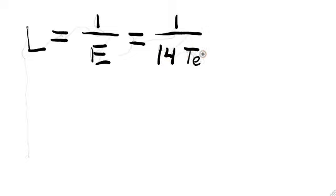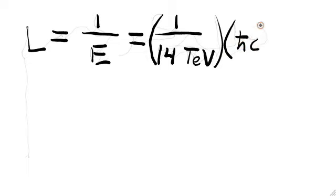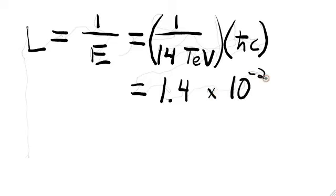Performing the relevant calculation for the 14 TeV center of mass collision energy that the LHC is supposed to produce by taking 1 over the energy and multiplying it by h-bar c, which, of course, we've set equal to 1, we find that the length scale is incredibly small, 1.4 times 10 to the minus 20 meters. This is such a small length that it's hard to get a good idea of just how small it is.